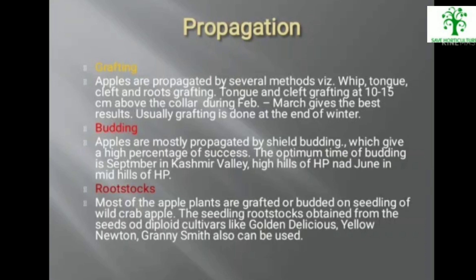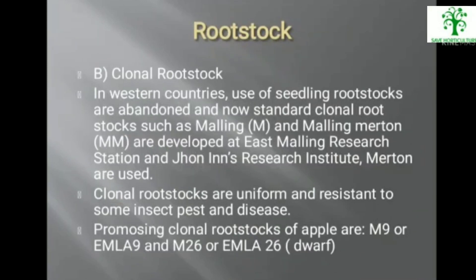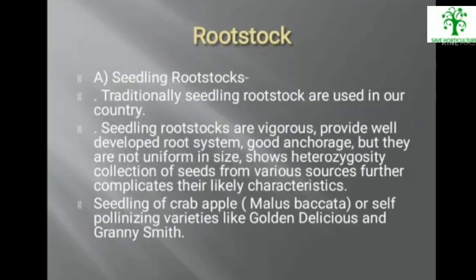Most apple plants are grafted or budded on seedlings of wild crab apple. Seedling rootstocks can be obtained from Golden Delicious, Yellow Newton, and Granny Smith. In western countries, standard clonal rootstocks such as Malling and Malling-Merton (MM) series, developed at East Malling Research Station, are widely used. Clonal rootstocks are uniform and resistant to some insect pests and diseases. Promising clonal rootstocks are M9 (EML9) and M26 (EML26), which are dwarfing. Traditionally, seedling rootstocks are used in India — they are vigorous and provide well-developed root systems but are non-uniform and show heterozygosity. Seedlings of crab apple (Malus prunifolia) and self-pollinating varieties like Golden Delicious and Granny Smith are used.